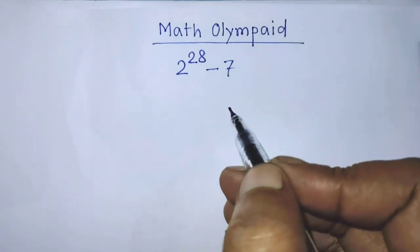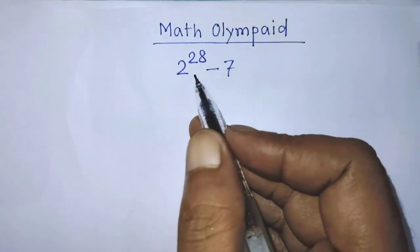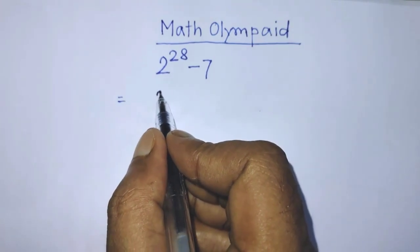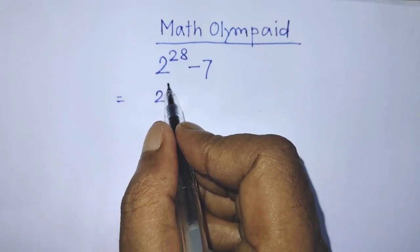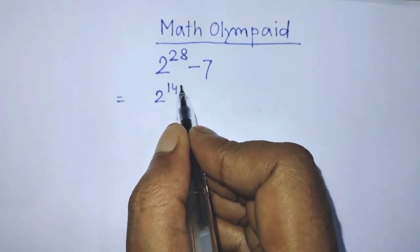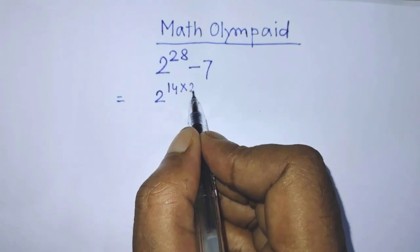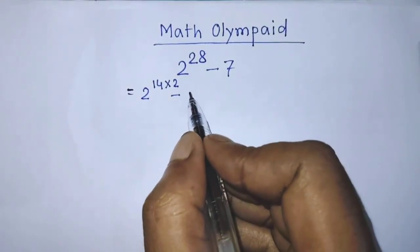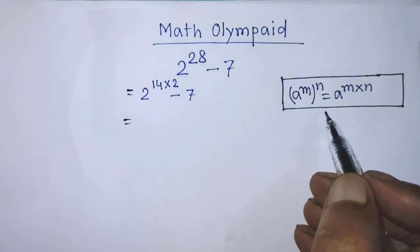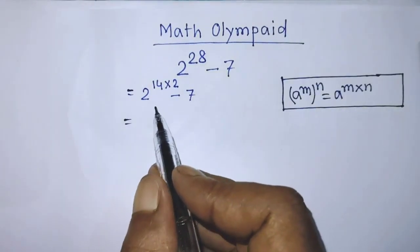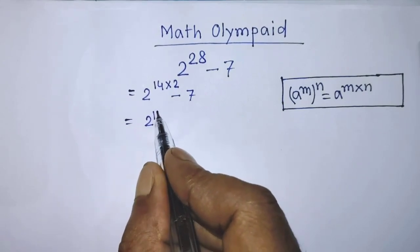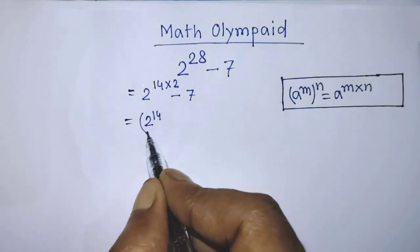So guys, in this algebraic expression, in the place of the first term, we can write 2 to the power 14 times 2, minus 7. According to this formula, it will be 2 to the power 14, whole to the power 2.